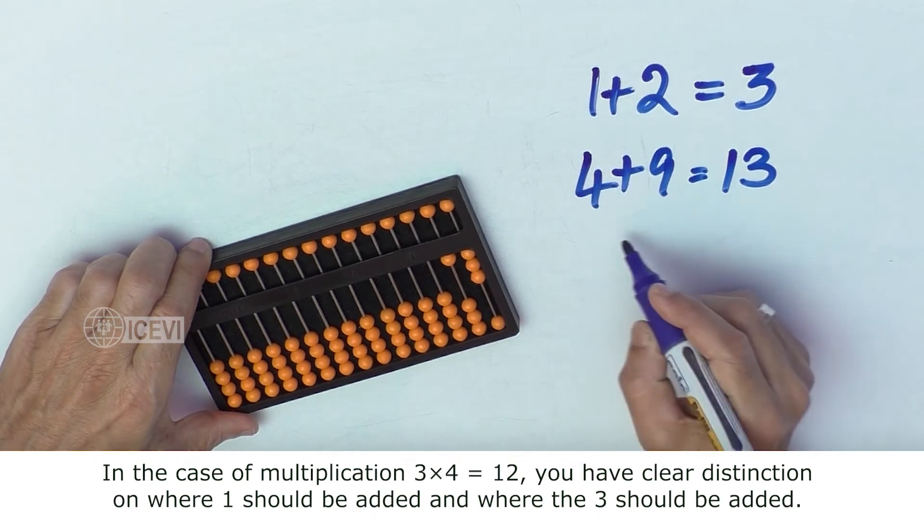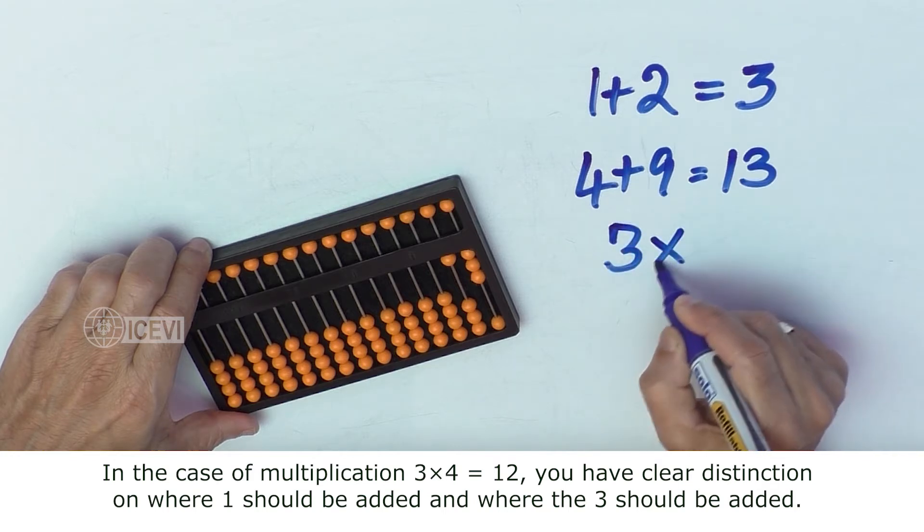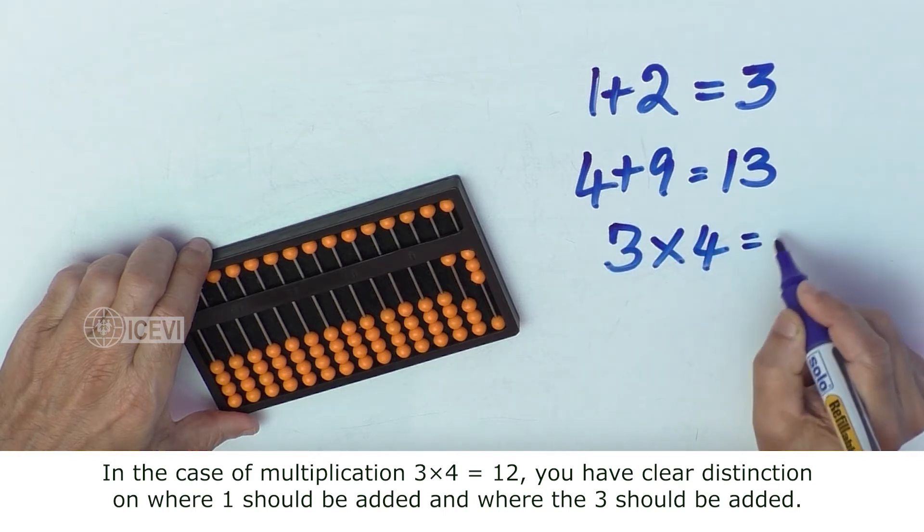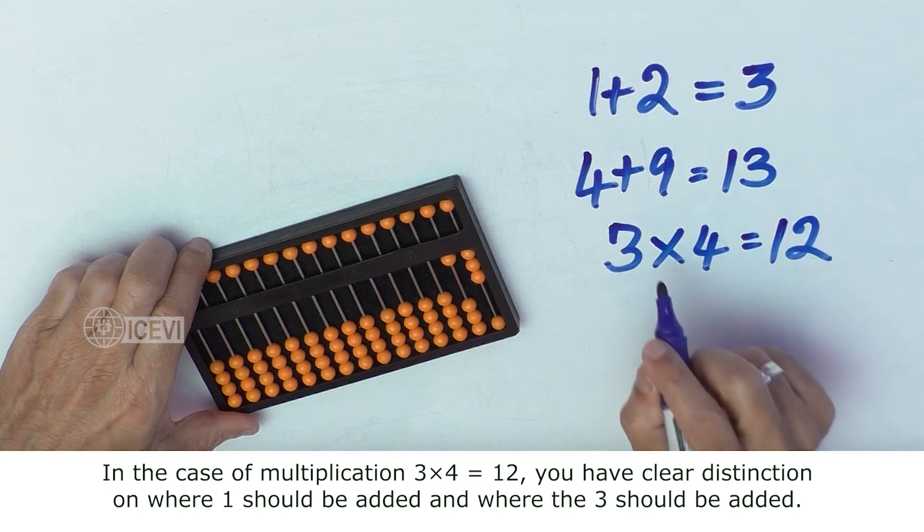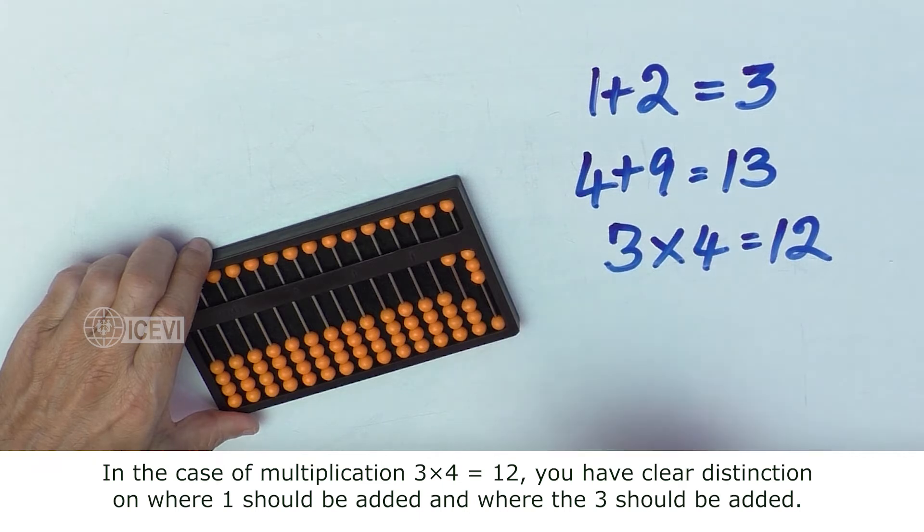In the case of multiplication of 3 and 4, we get 12. You have clear distinction on where 1 should be added and where 3 should be added.